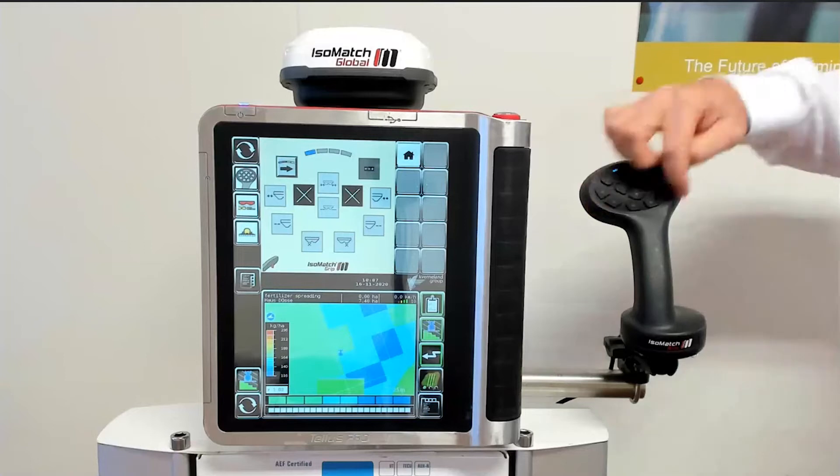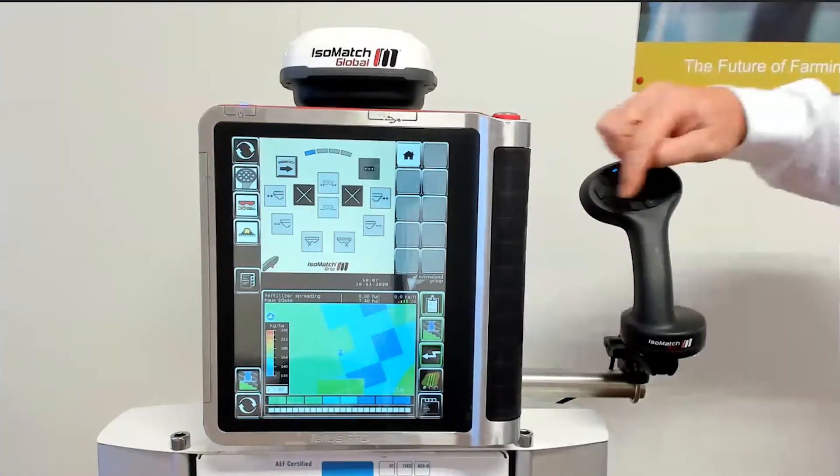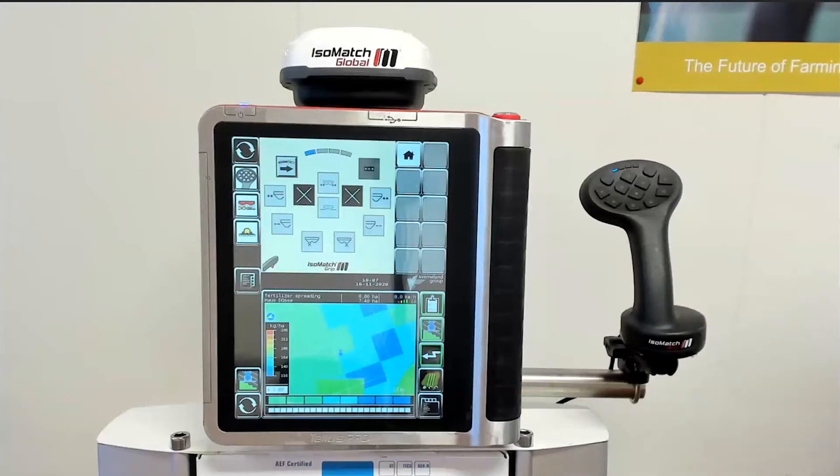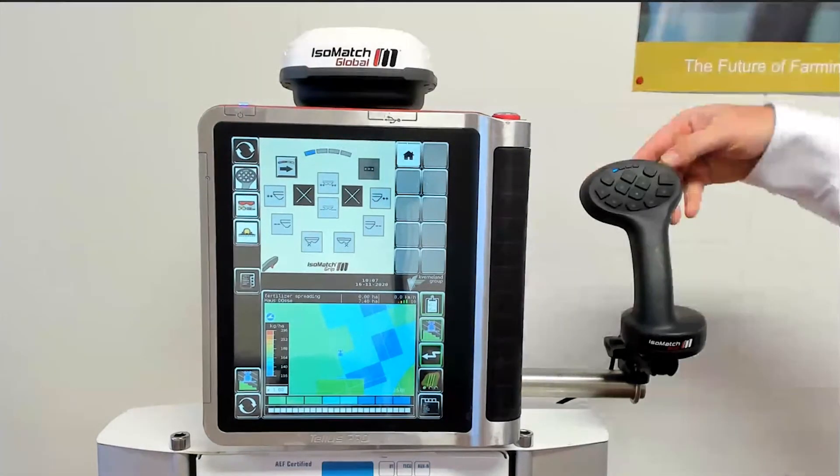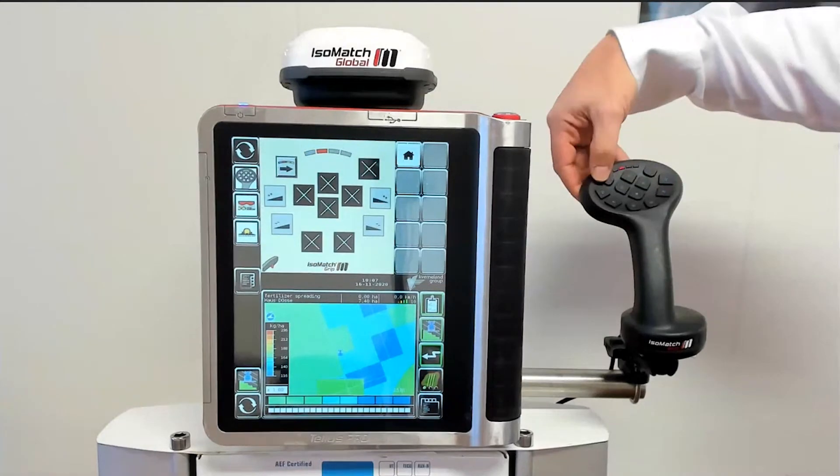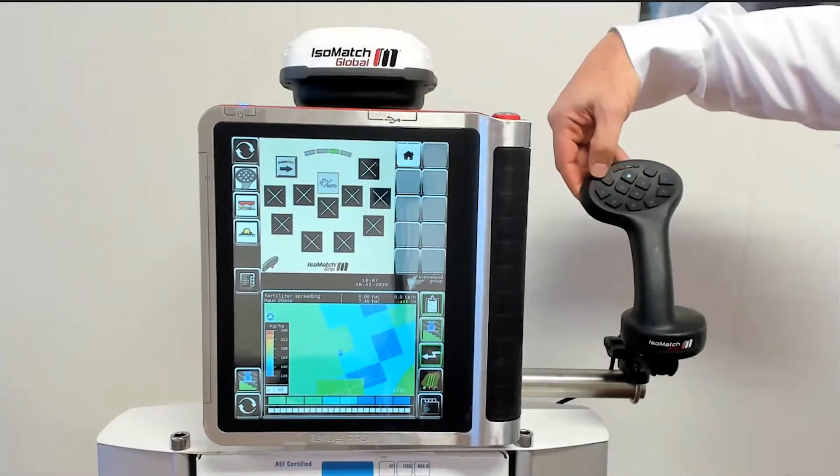The grip has 12 buttons, of which a maximum of 11 can be used to allocate a function of the implement. The 12th button is then used to scroll to the next mode. As an operator, you can select up to 4 modes and you can see them in the screen or on the LED on the grip. It's blue, red, green and yellow.